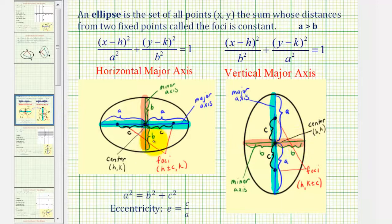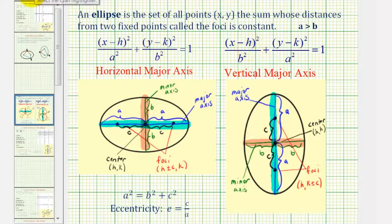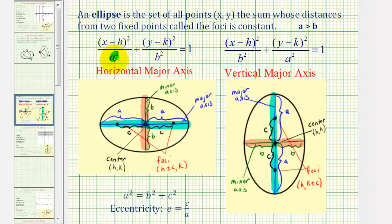Notice how the center of the ellipse is where the two axes intersect, and it always has coordinates (h, k) based upon the form of the equation. With these two forms of the equation, a is greater than b, and therefore a squared is greater than b squared, meaning that a squared is the larger denominator.